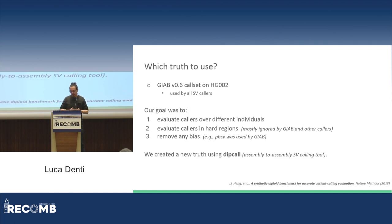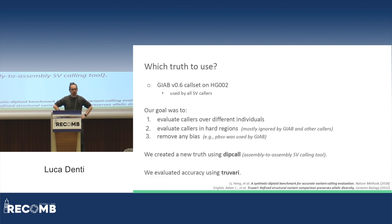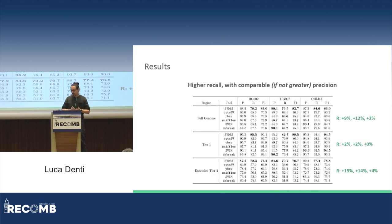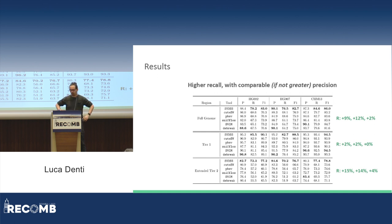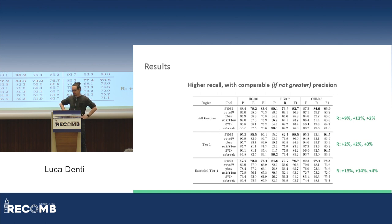We created a new truth set using DeepCall, an assembly-to-assembly SV calling tool, and then evaluated our accuracy using Truvari. These are two tools available in the literature. The results can be summarized with one sentence: we achieved higher recall with comparable, if not greater, precision. Especially in the extended tier 2 — everything outside tier 1, i.e., all the hard regions of the genome — we achieved very high recall with comparable precision.